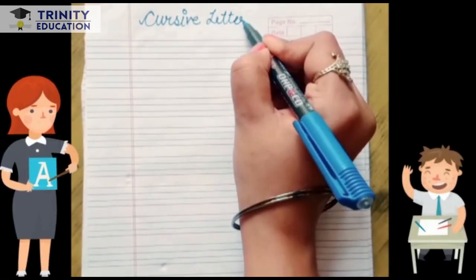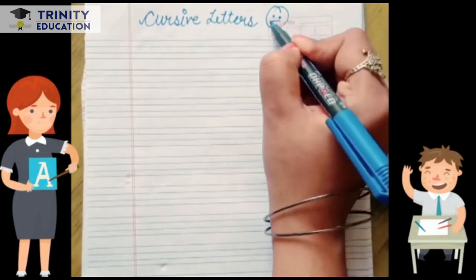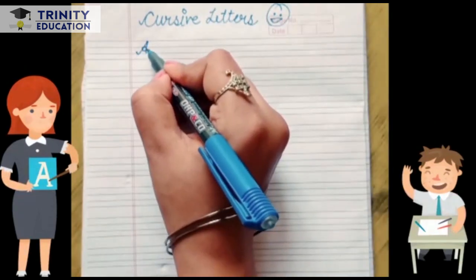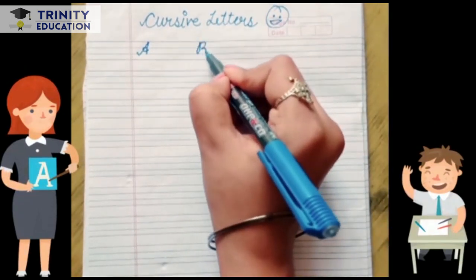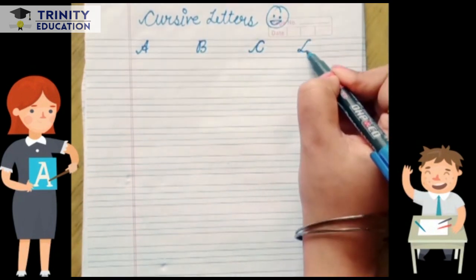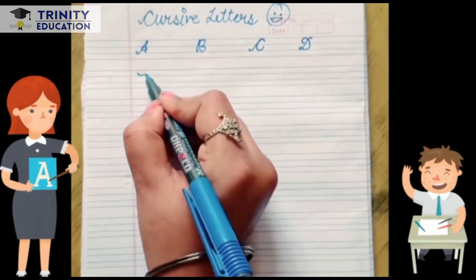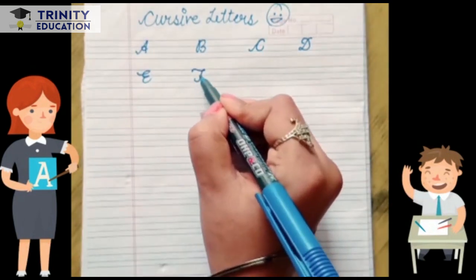So let's start. A for Apple, B for ball, C for cat, D for dog, E for elephant, F for fish.